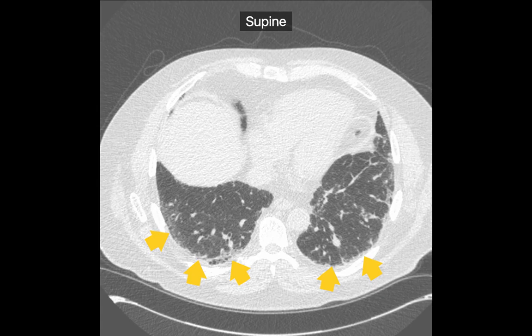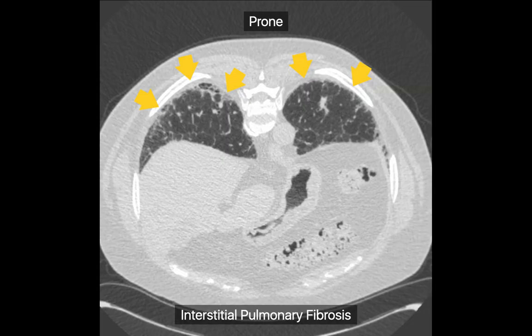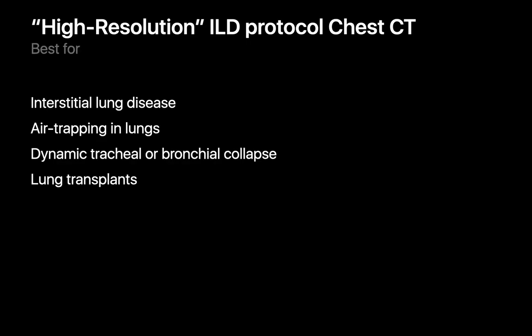Prone images are sometimes included since it can be difficult to tell if subtle opacities along the posterior margin of a lower lobe are true interstitial fibrosis or just dependent atelectasis. By flipping the patient over, we can tell the opacities in this case are true interstitial fibrosis, since the opacities would have gone away if they were dependent atelectasis. So ILD protocol chest CTs are usually good for interstitial lung disease, air trapping, and dynamic airway collapse. Since air trapping and dynamic airway collapse are features we also look for when assessing for lung transplant complications, ILD protocol chest CTs are preferred when imaging many lung transplant patients too.